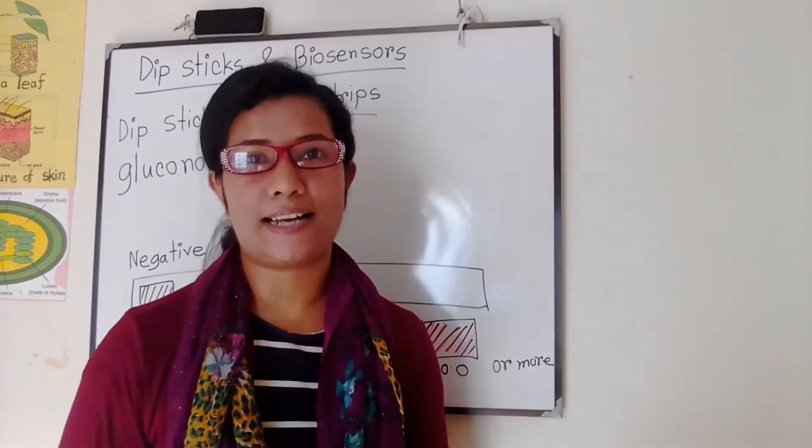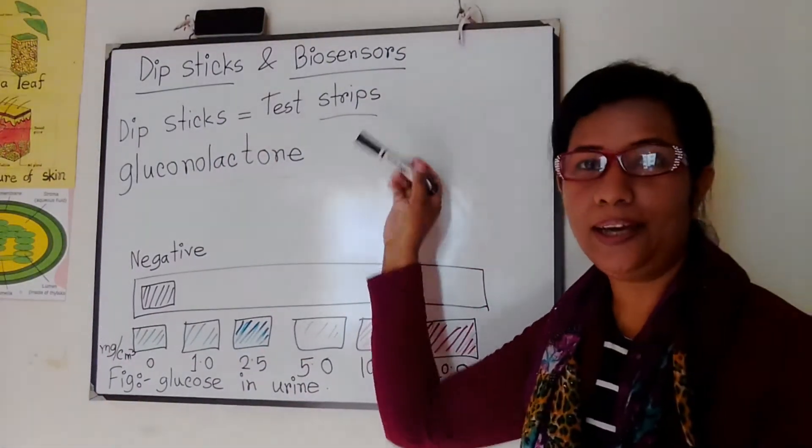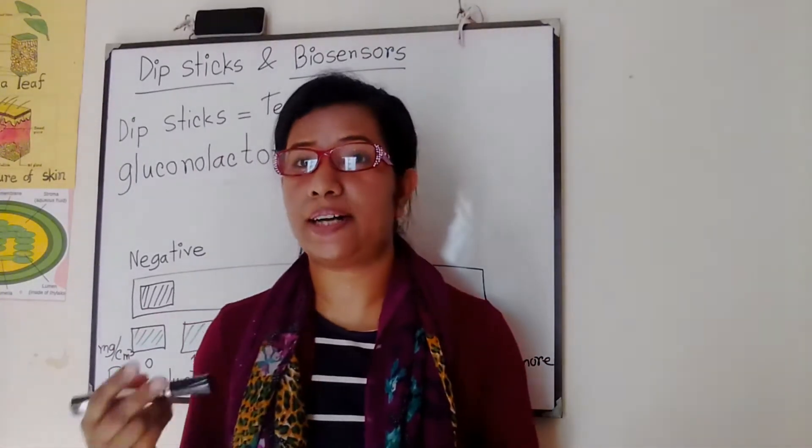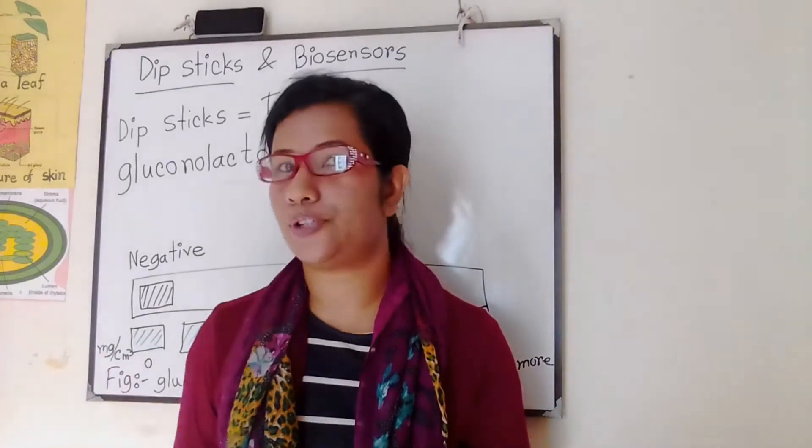So dipsticks, also known as test strips, can be used to test urine for a range of different factors including pH, glucose, ketones, and protein.